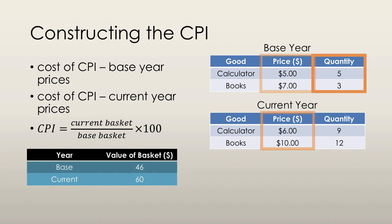We're going to do the same thing for the current year, but with a really important emphasis: when we do this for the current year, the quantity of goods and services does not change in the basket. It may change in terms of how much was actually bought and sold in the current year, but the calculation for CPI uses the same quantities as the base year. The only thing that changes is the price.